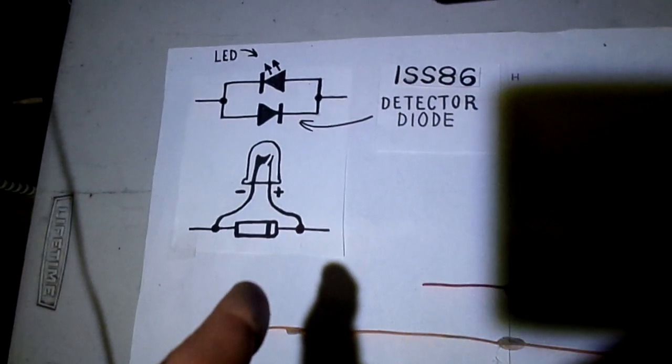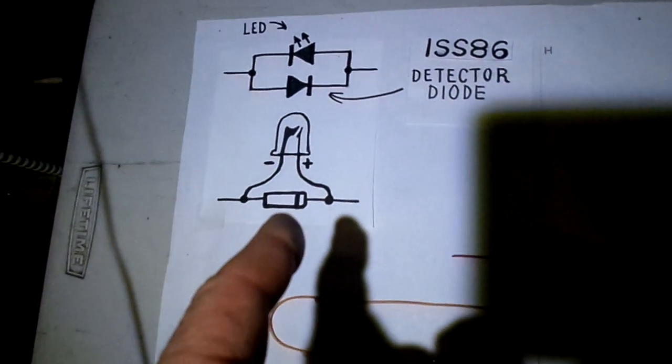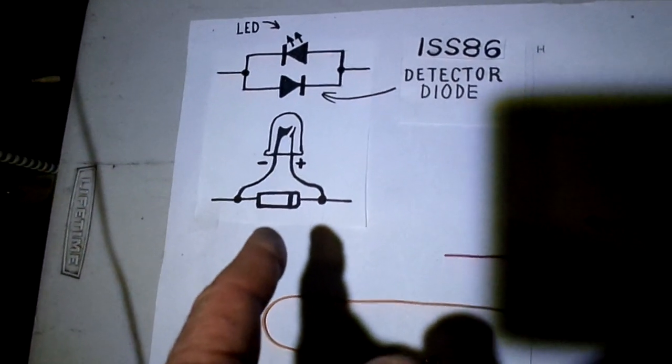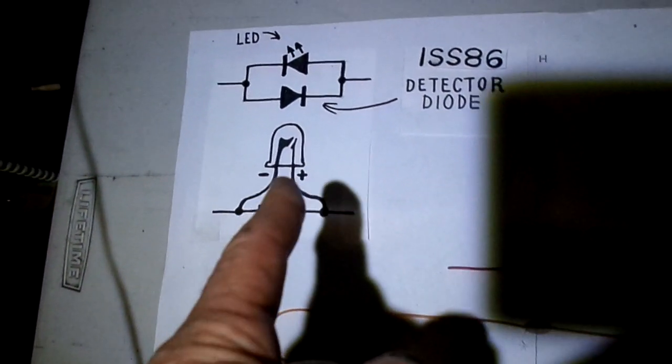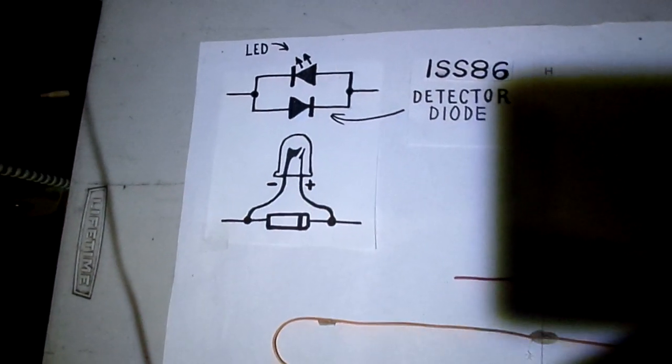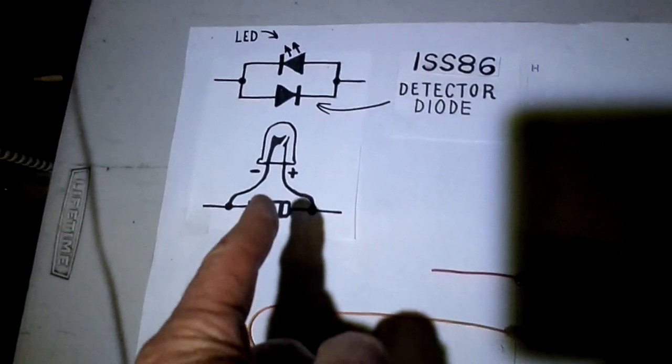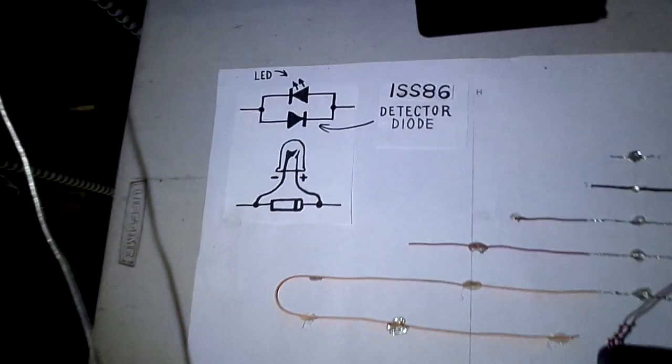Also, if you're going to build one, make sure you observe the polarity when you build it. This diode here has to be configured the way this is. You might notice the plus and the minus on the LED and the direction of the diode. That's very important. If you do it backwards, it's not going to work.